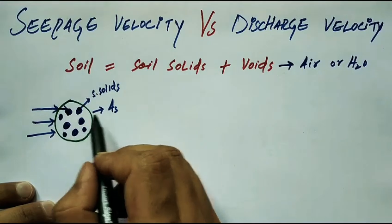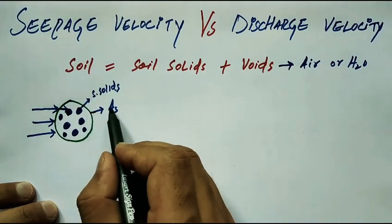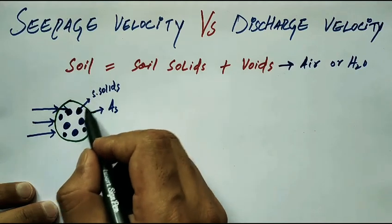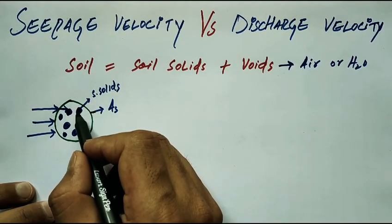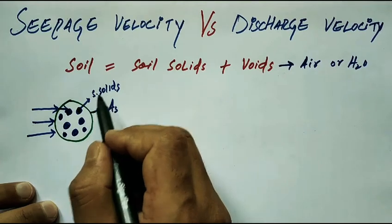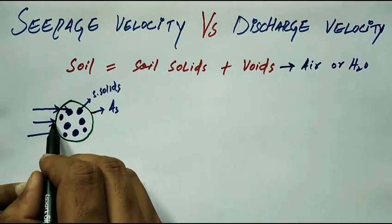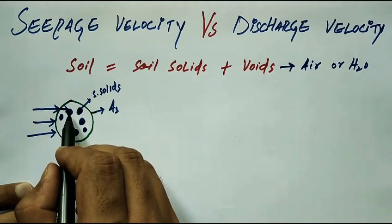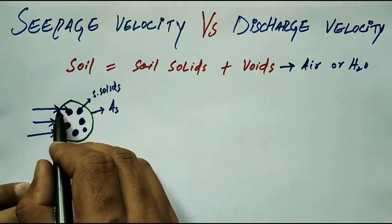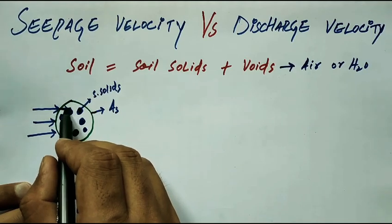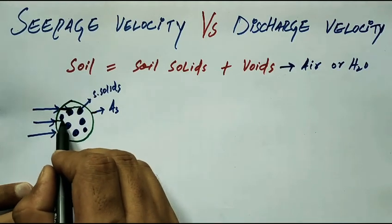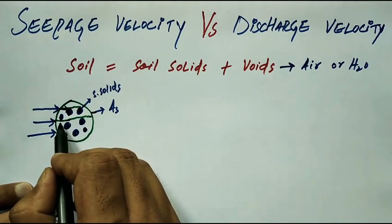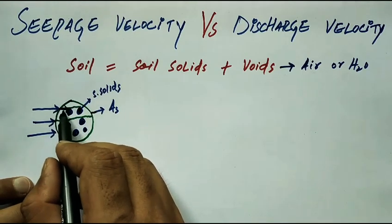Suppose this is a soil specimen and the area of this specimen is A. The blue dots represent soil solids. When water flows through this soil sample, the water will not flow through the soil solids — water cannot flow through solids — so water will flow through the voids in this way.